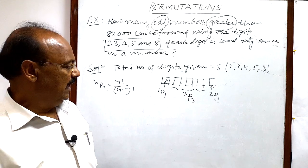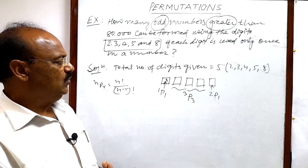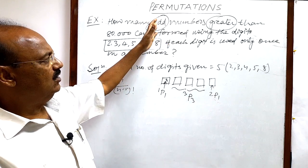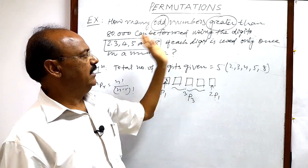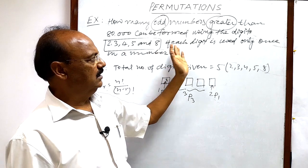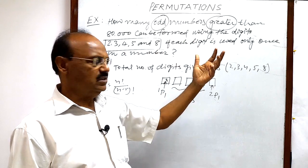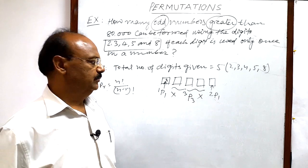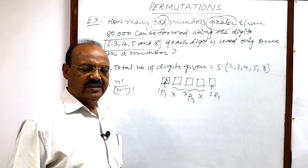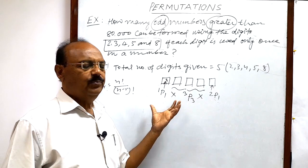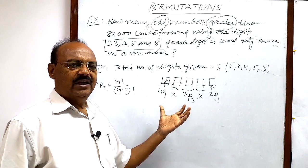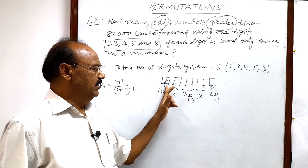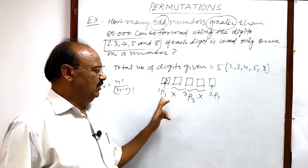And the total number of numbers fulfilling these conditions - that number is odd as well as number is greater than 80,000 and digit is used only once - will be multiplication of these 3. Very simple. So you can write a simple statement here.